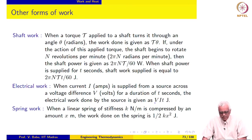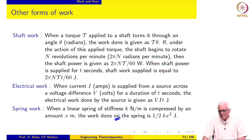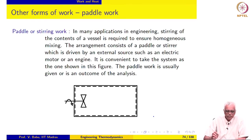Spring work: when a linear spring of stiffness k Newton per meter is compressed by an amount of x meters, work done on the spring is ½kx², or the work interaction for the spring is minus ½kx². These are the forms of work that we are likely to encounter in our course. There are many other forms available in standard literature, but these are the ones we will use.